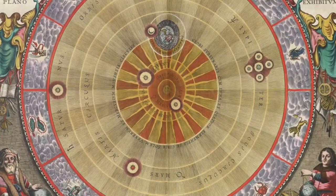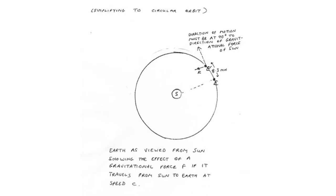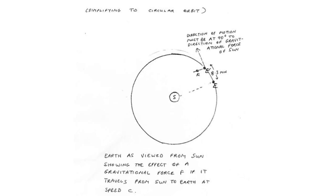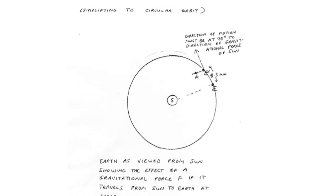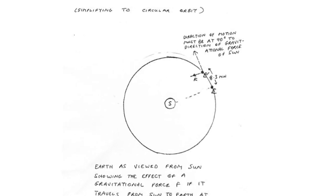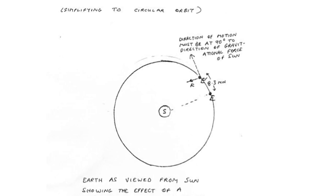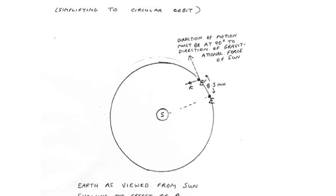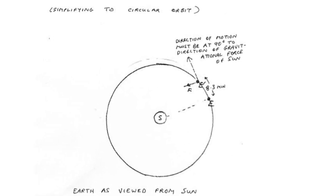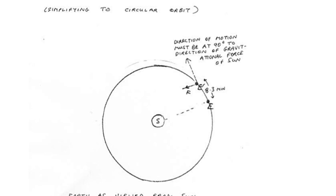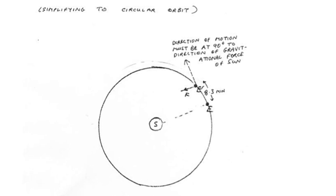In a Newtonian heliocentric system we understand the forces of attraction that the primary and its satellite exert upon one another to be equal and opposite. A reaction that was caused by an action 8.3 minutes beforehand, in the case of the Earth and the Sun, would no longer be the opposite that the law describes. The effect of this can be seen from my diagram of the Sun as the reference point or frame of reference for an orbiting Earth.